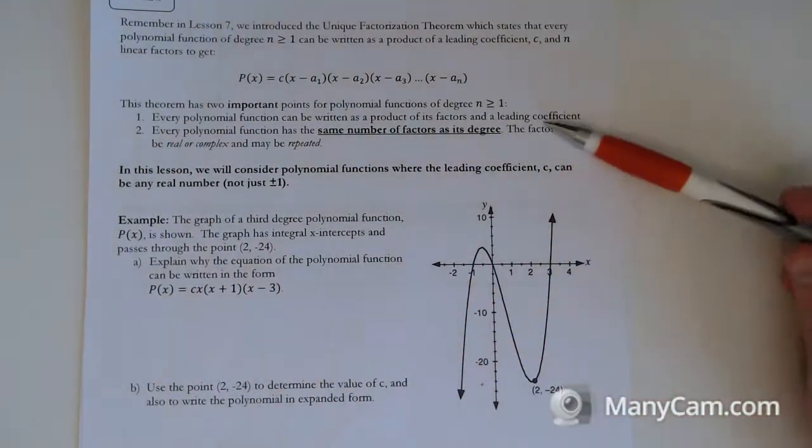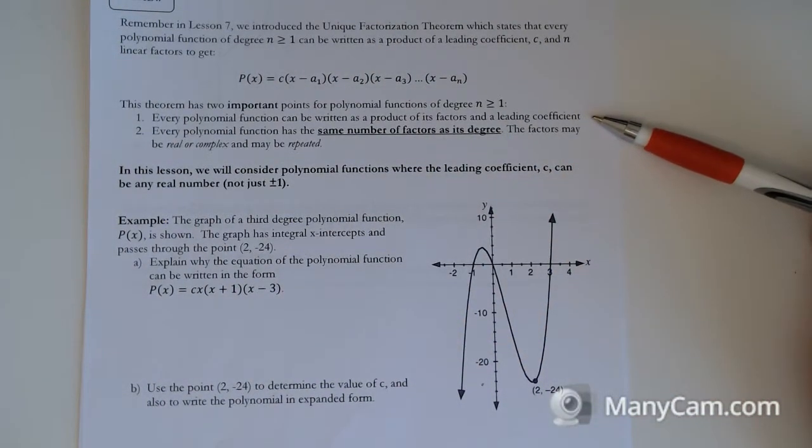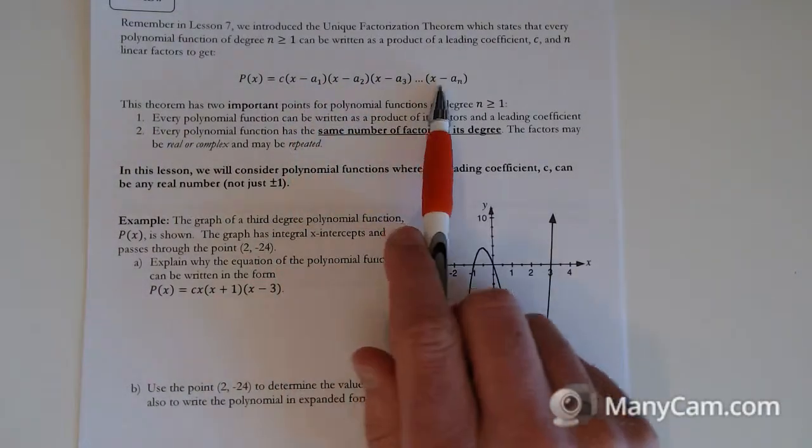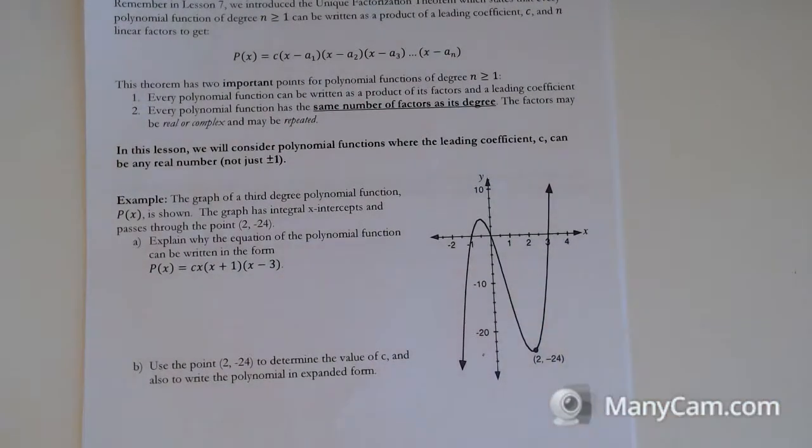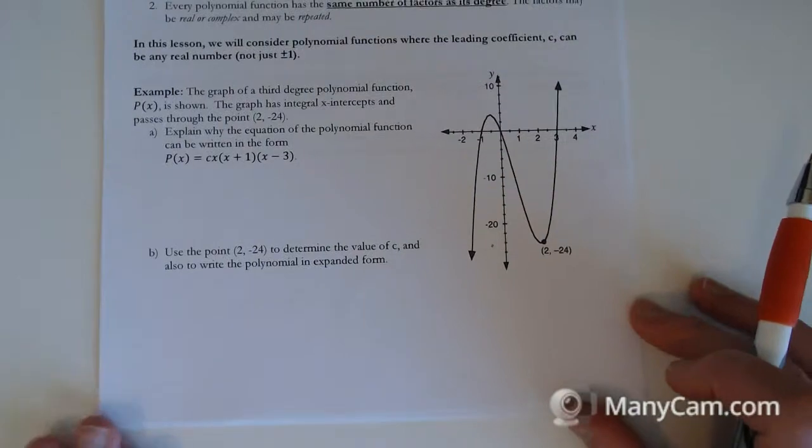So recall, every polynomial function can be written as a product of its factors and a leading coefficient. Every polynomial function has the same number of factors as its degree. So there's going to be the same number of brackets as whatever degree the polynomial is. In this lesson, we're going to be doing ones with c values, not just 1. So let's jump right into the first example.